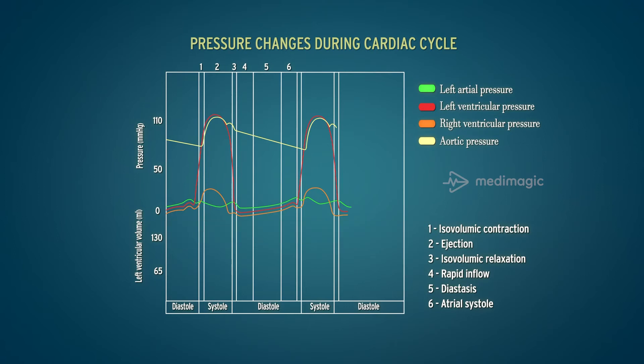As the blood fills, the ventricles relax, which leads to a further decline in the intraventricular pressure. The cycle starts again with the pressure at diastasis.